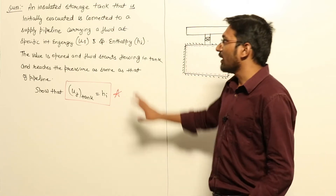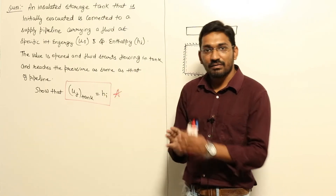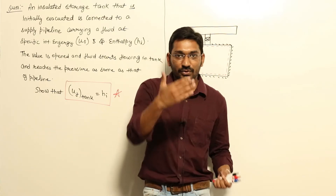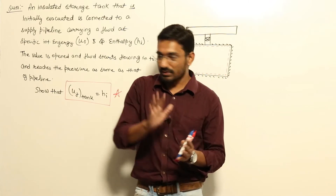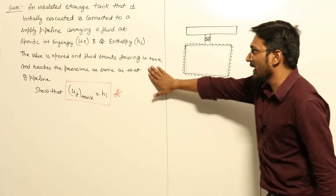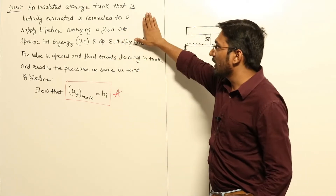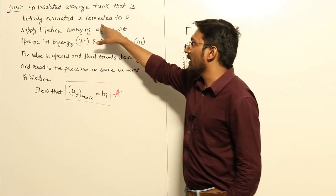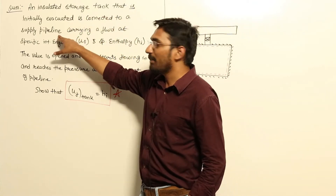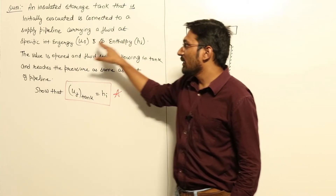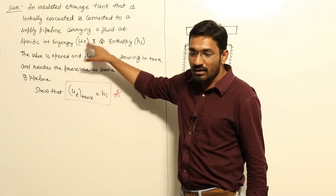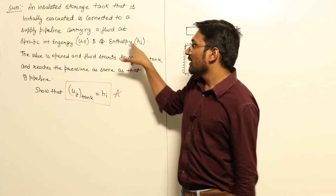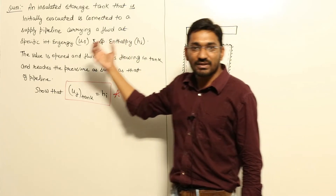Now let us solve a numerical on unsteady state flow. We already covered the steady flow energy equations, unsteady state flow energy equations, and how to solve them. The numerical states: an insulated storage tank that is initially evacuated is connected to a supply pipeline carrying a fluid at specific internal energy ui and specific enthalpy hi.